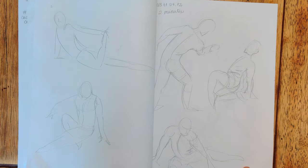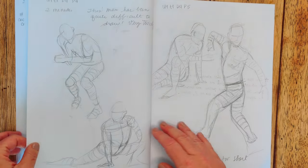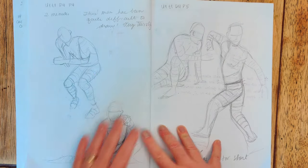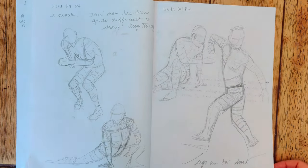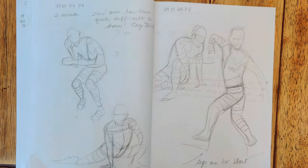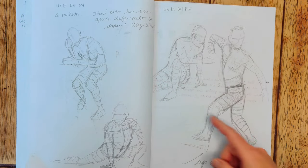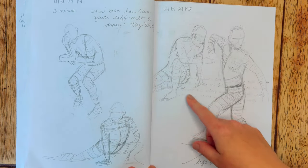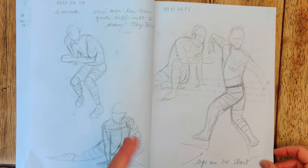My note, this man has been quite difficult to draw. Very twisty. And here I can see that I tried to do the wrapping lines from Michael Hampton's book to help with 3D information. That is, our limbs coming forward or receding. But here, this looks rather dirty.